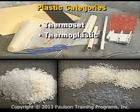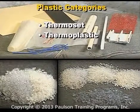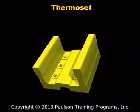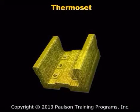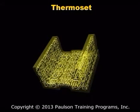There are two broad categories of plastic: thermoset and thermoplastic. Thermoset plastics are plastics in which the molecules cross-link or attach to each other when the plastic is heated. These cross-links are permanent.